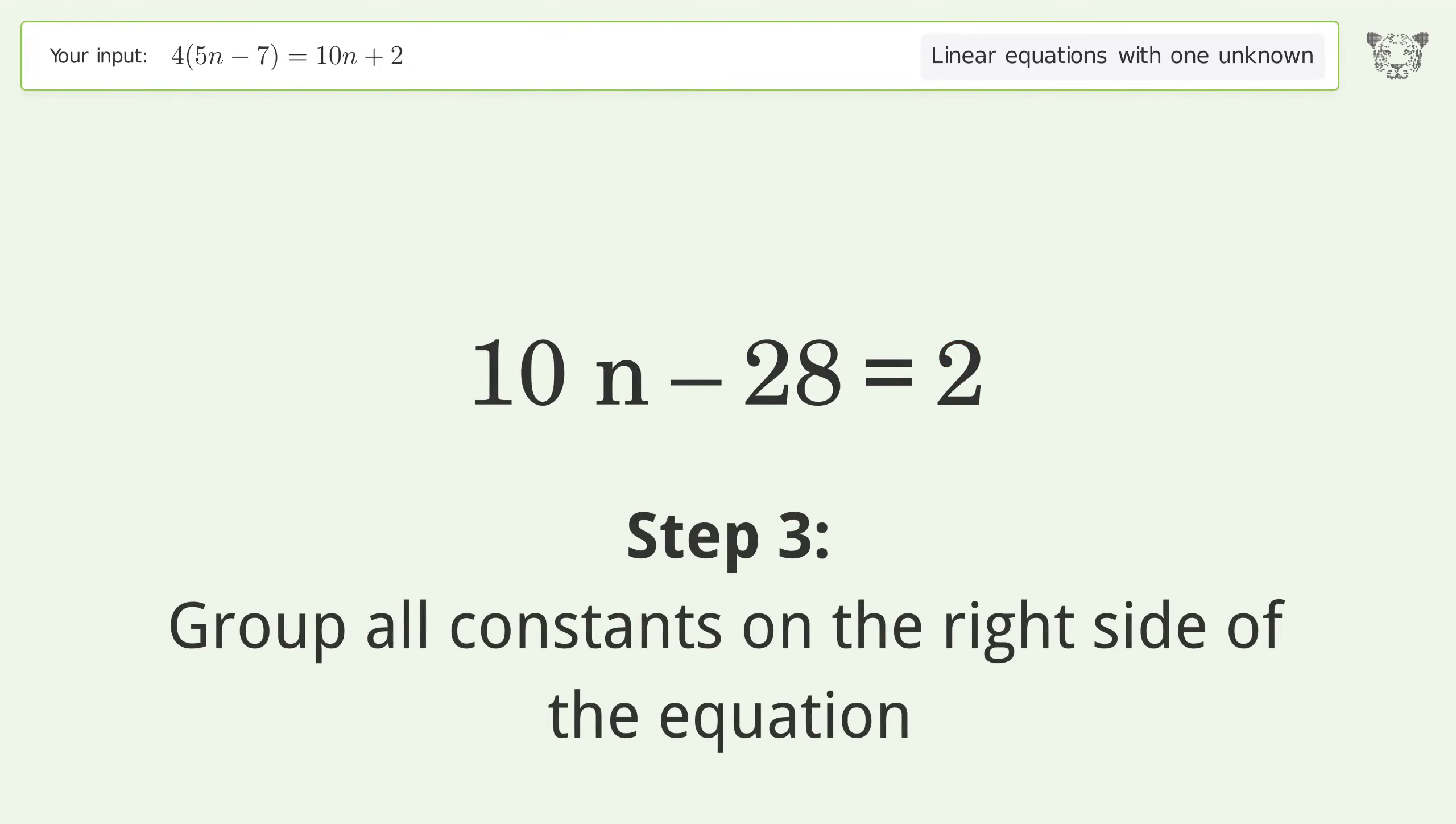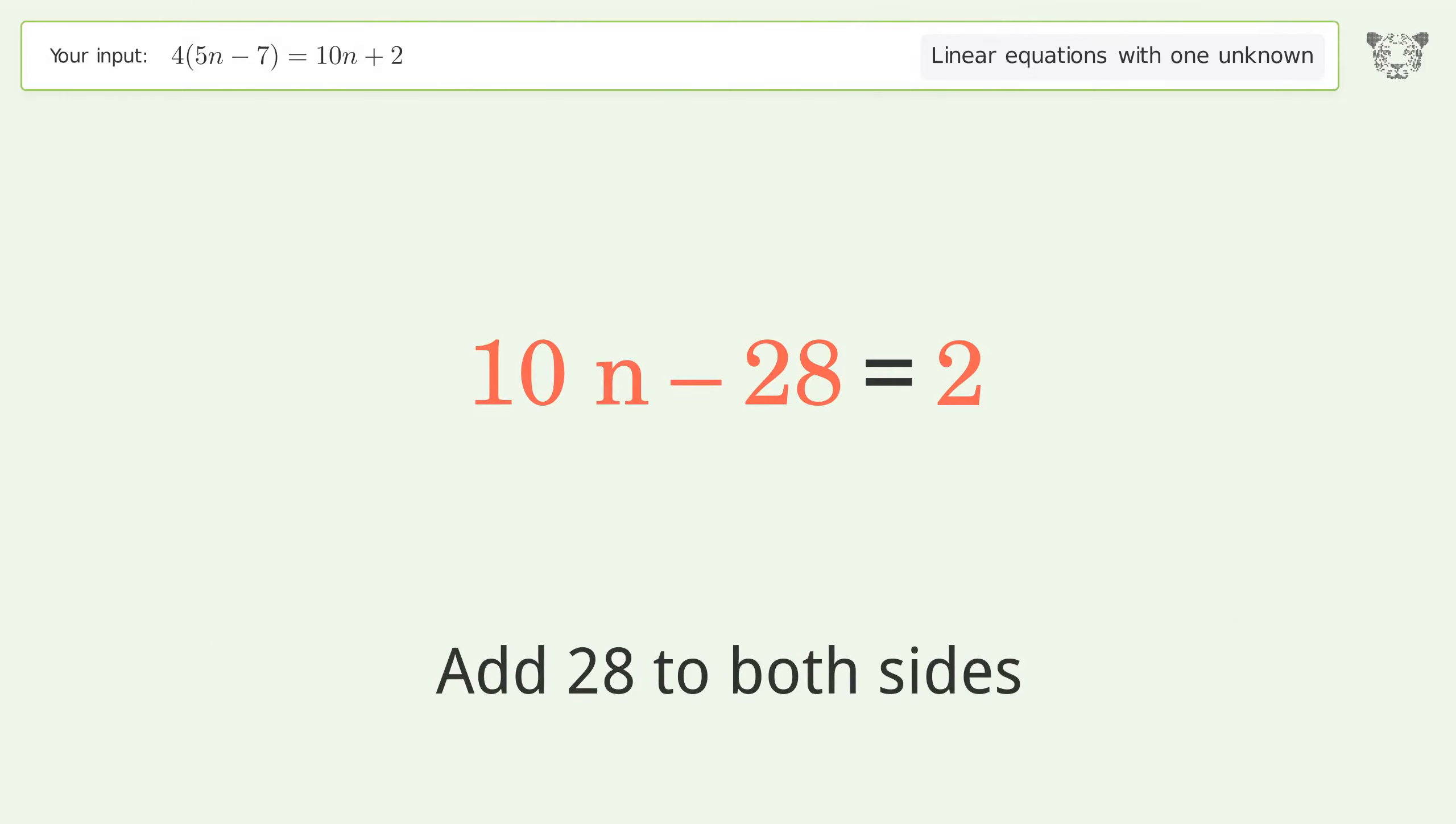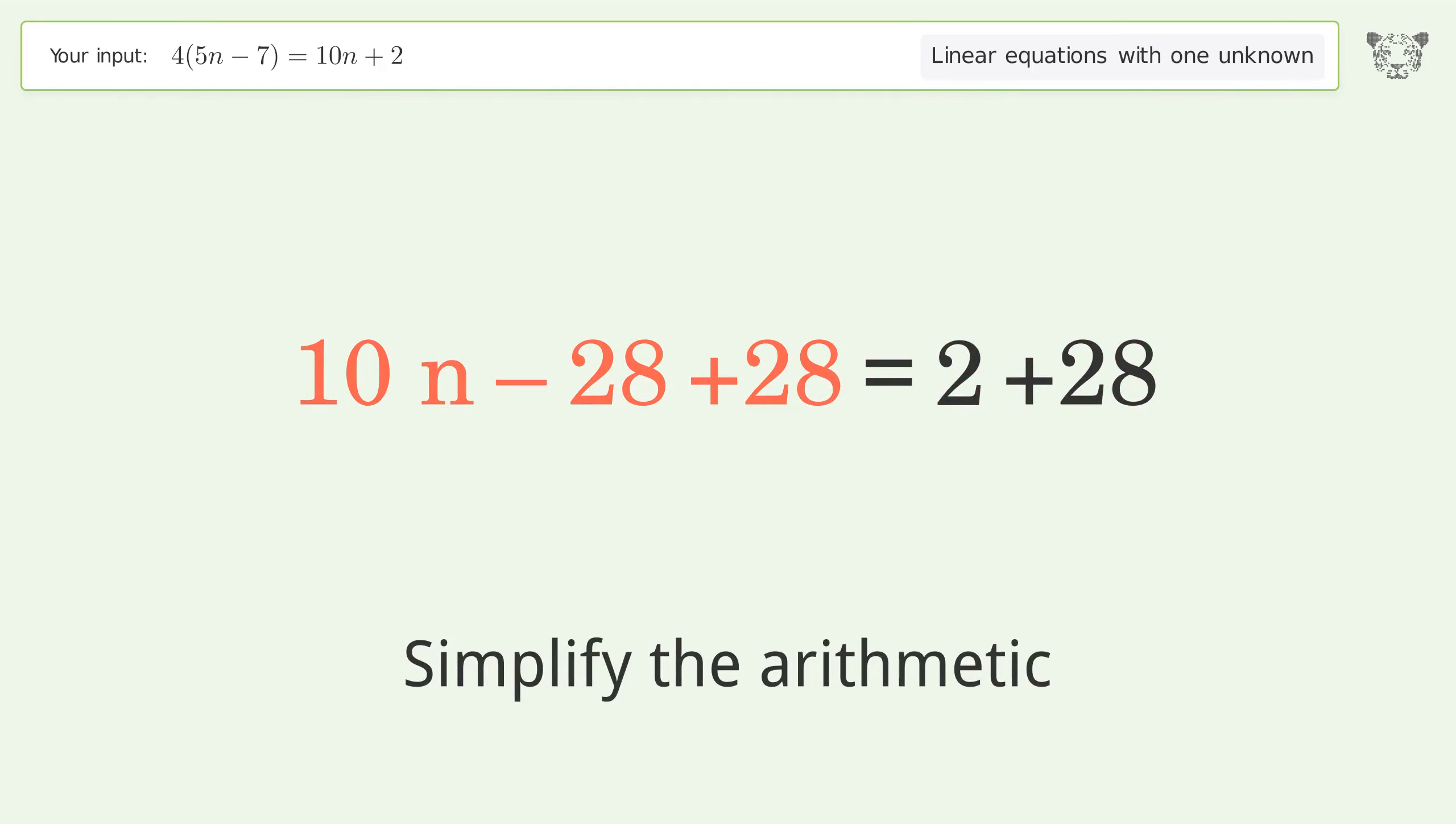Group all constants on the right side of the equation. Add 28 to both sides. Simplify the arithmetic.